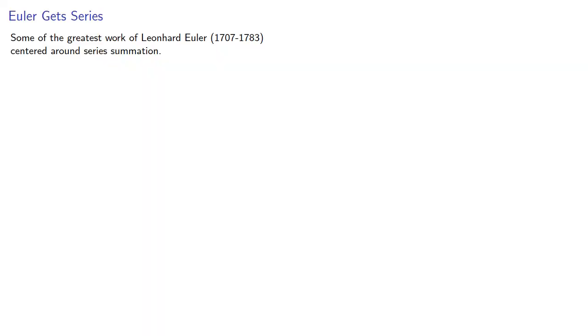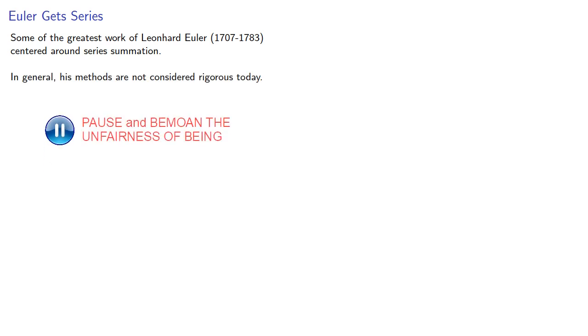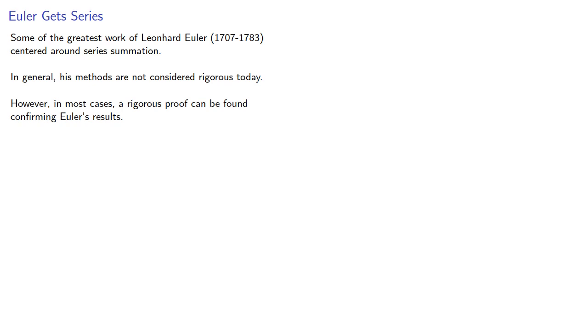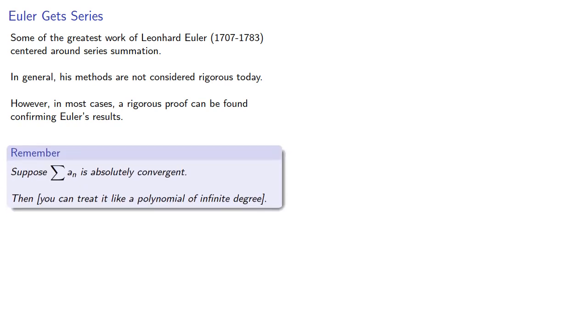Some of the greatest work of Leonhard Euler centered around series summation. In general, his methods are not considered rigorous today, however in most cases a rigorous proof can be found confirming Euler's results. Roughly speaking, these rigorous proofs rely on the theorem that if a series is absolutely convergent, then essentially we can treat it like a polynomial of infinite degree.